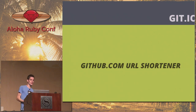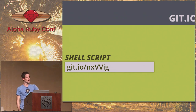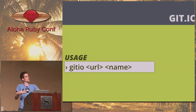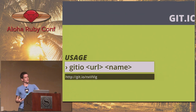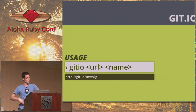Git.io is our URL shortener. The easiest way to use it — there's a shell script you can hit from that URL. You run git.io and then the URL and an optional name, and you can convert any GitHub URL into a git.io short URL. I use this in slides because it's easier than the whole repository URL, or if you're on Twitter.